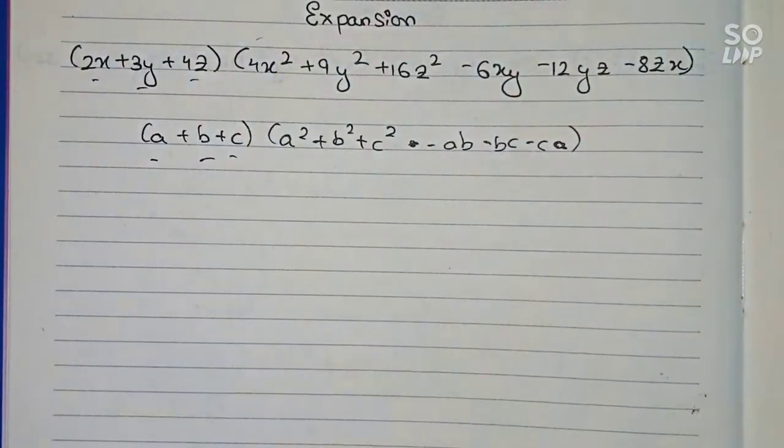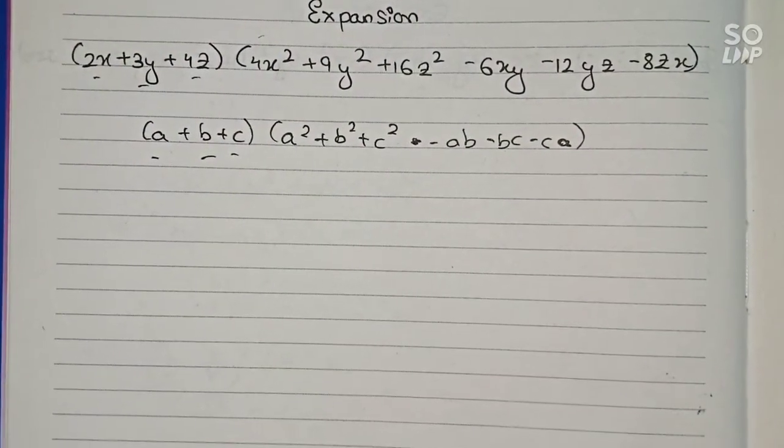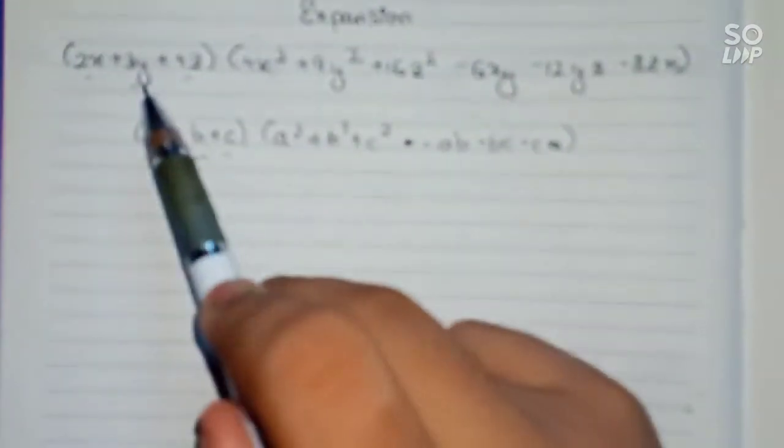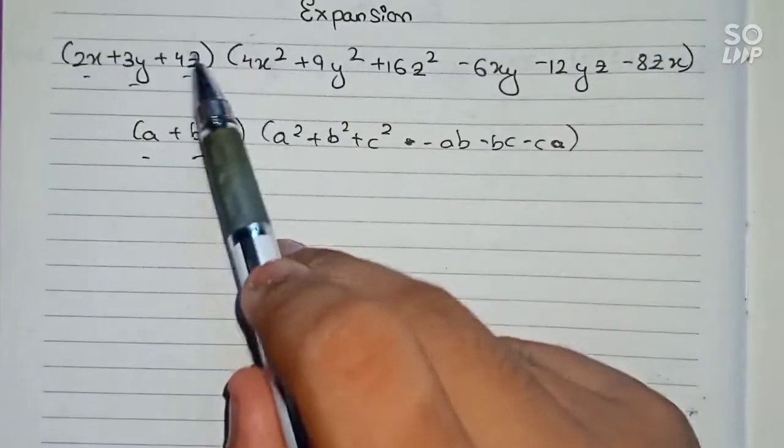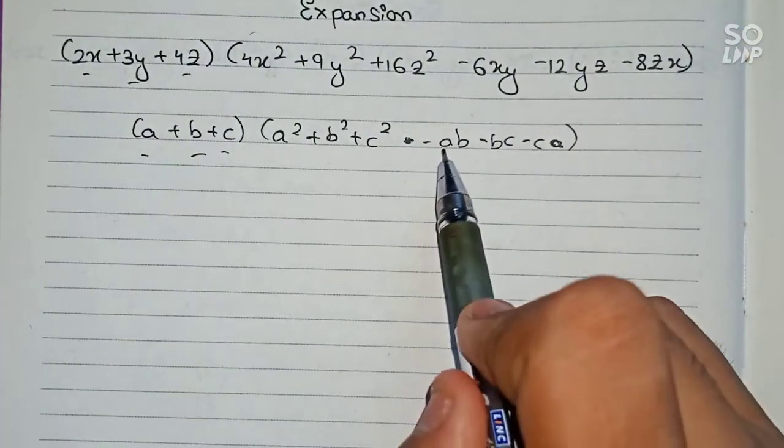First, a². So 2x to the power 2 is 4x². Definitely. Now b², which means 3y to the power 2, is 9y². Now c², which means 4z², is 16z².